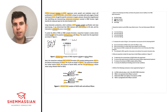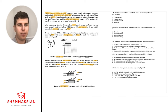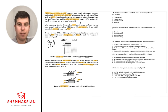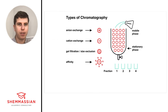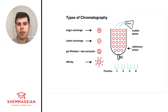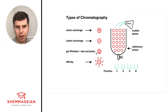Before diving into the questions, let's take a quick content break. The passage mentioned purification and mass spec, so let's talk about chromatography — one of the higher-yield biochemistry lab techniques for the MCAT. There are several types we need to know: anion exchange columns, cation exchange columns, gel filtration, size exclusion chromatography, and affinity chromatography.